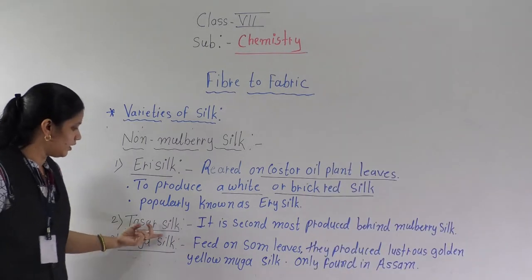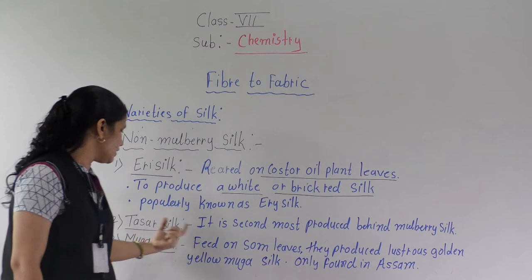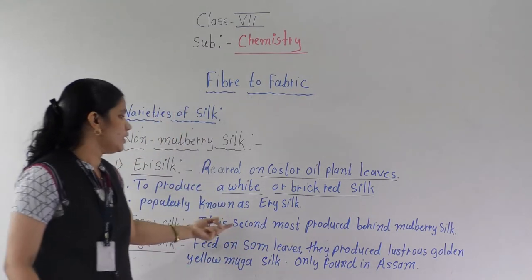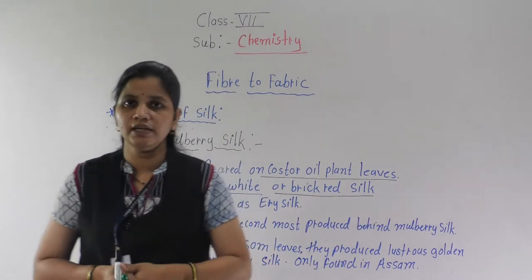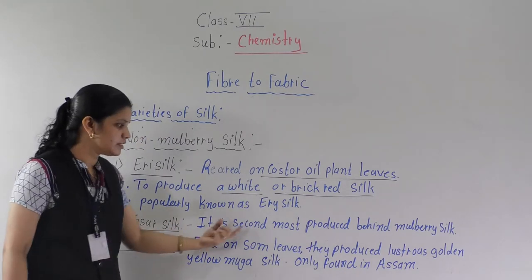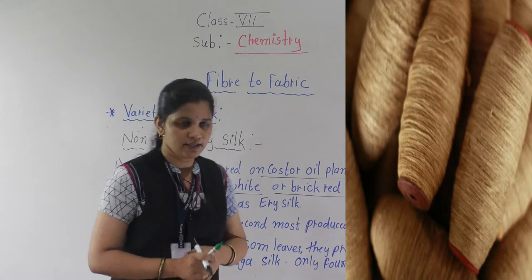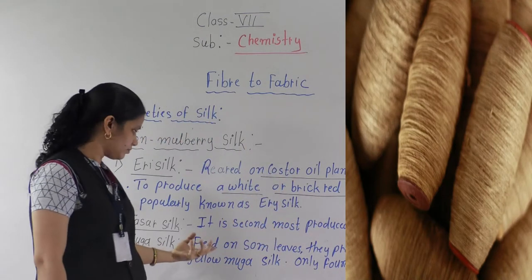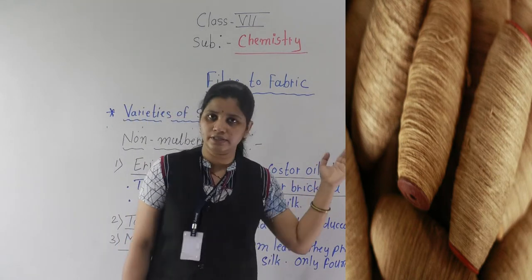The second type of non-mulberry silk is tassar silk. It is the second largest silk produced, second most produced after mulberry silk. After mulberry silk, tassar silk is the next most commonly produced silk in the world.